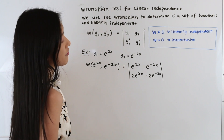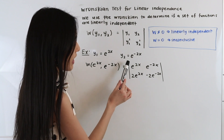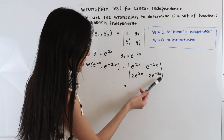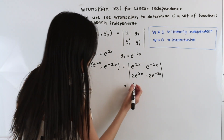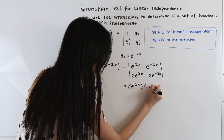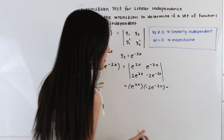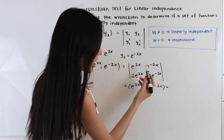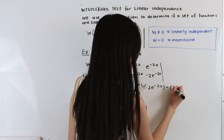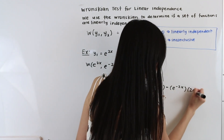Now let's go ahead and evaluate this determinant. We start by multiplying the elements of the major diagonal — e to the 2x and negative 2e to the negative 2x — giving us e to the 2x times negative 2e to the negative 2x. Then we subtract the product of the minor diagonal, which is e to the negative 2x times 2e to the 2x.